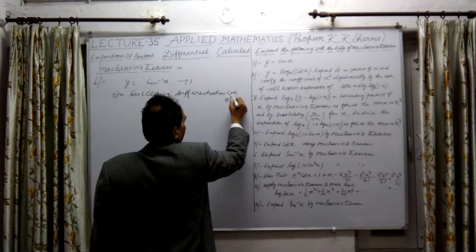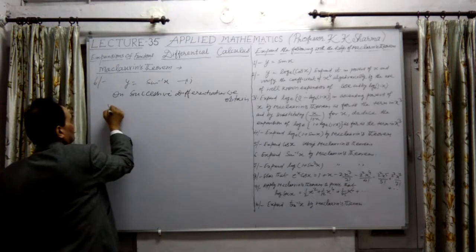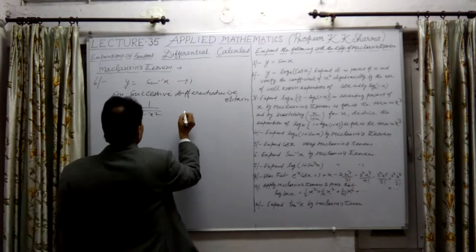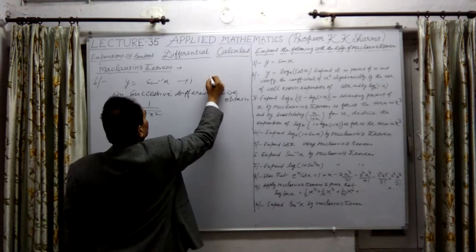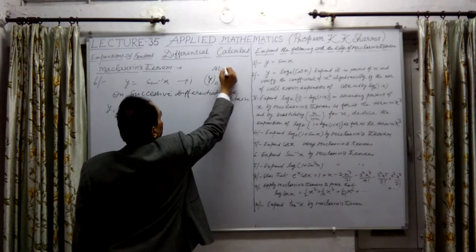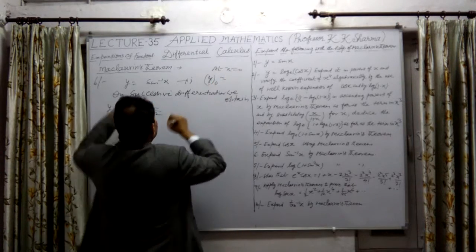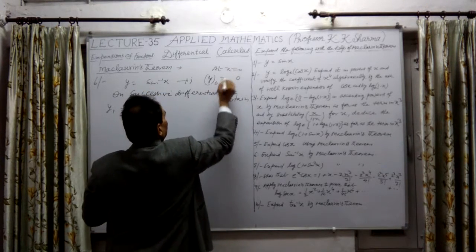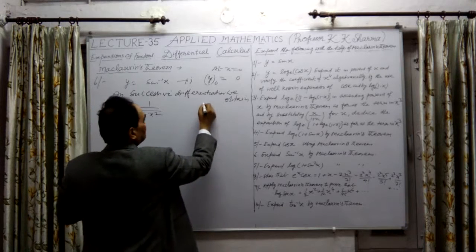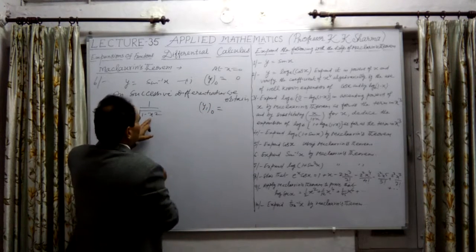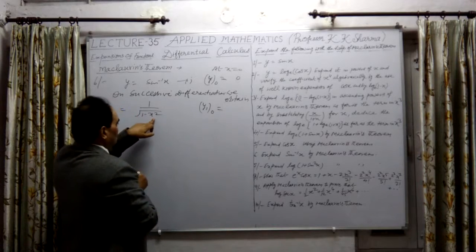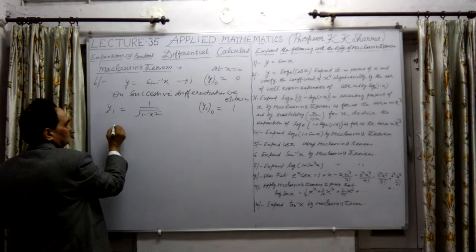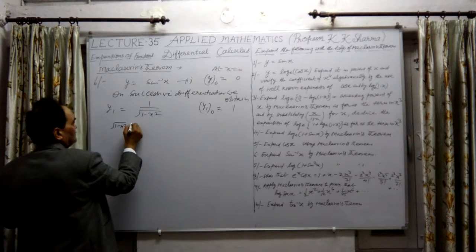On successive differentiation, we obtain Y1 is equal to 1 upon √(1 − x²). Now at x = 0, Y0 is 0 because sin(0) = 0. Y1 at 0 is 1 upon 1 because x² = 0 and √1 = 1, so Y1(0) = 1.